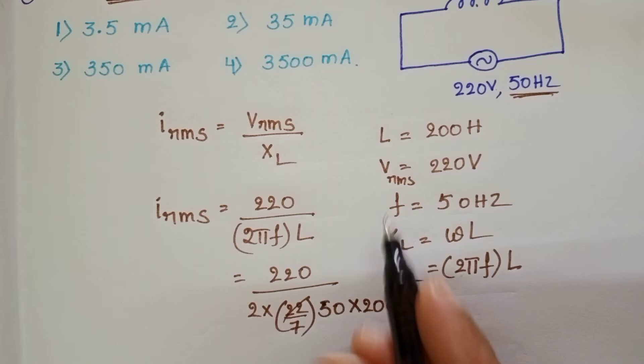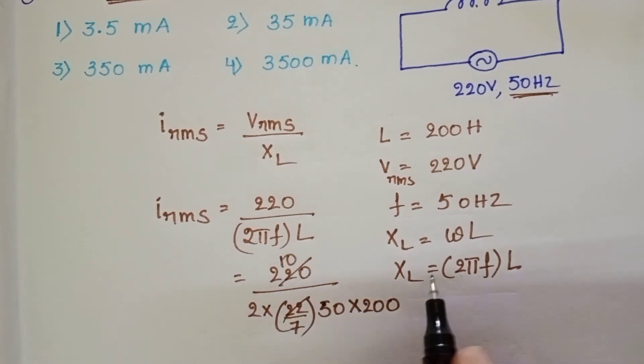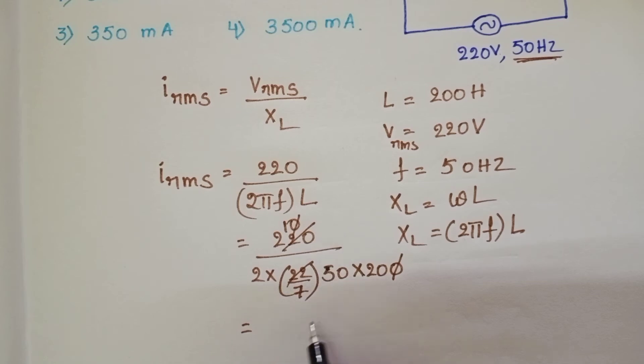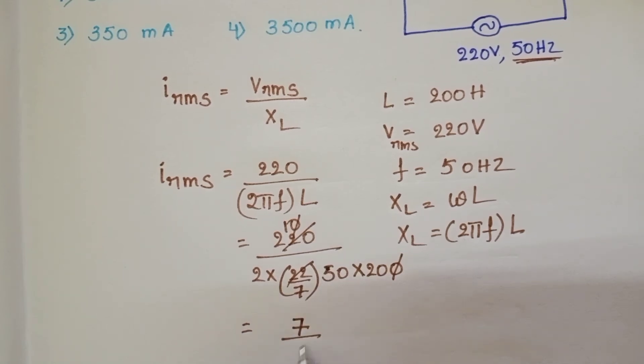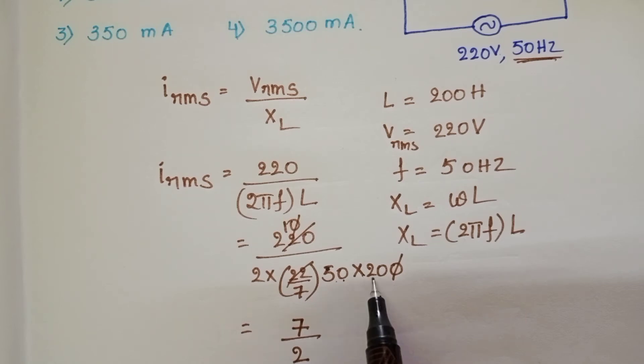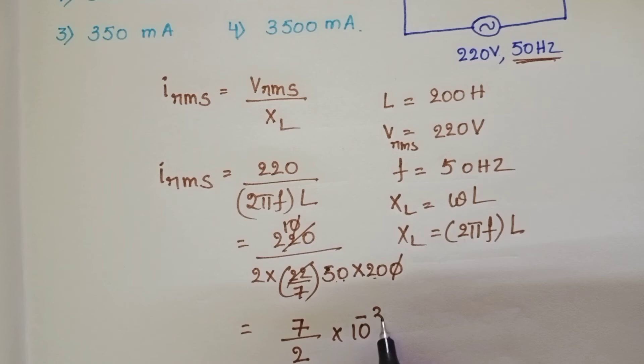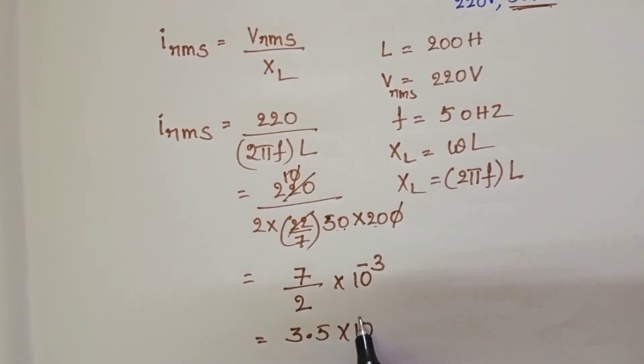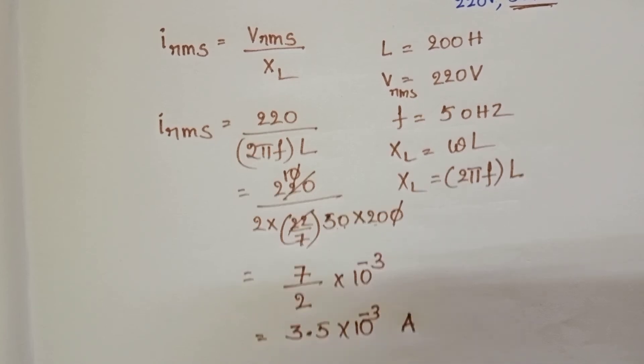Simplify this. This 7 goes to numerator. 7 by 2. Here 50 into 20 is 1000. Then it becomes 10 power minus 3. So, 3.5 into 10 power minus 3 ampere.